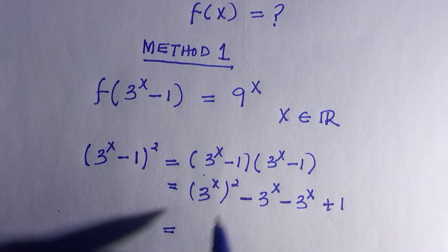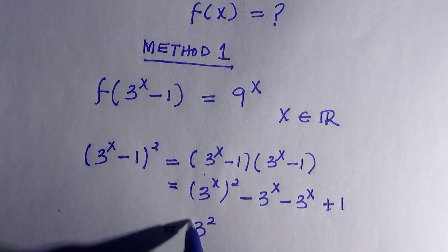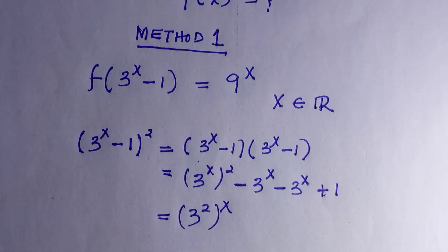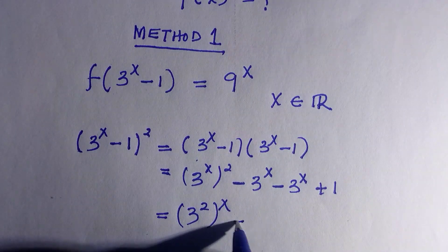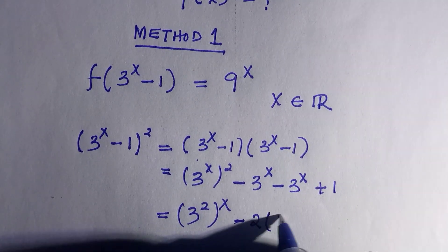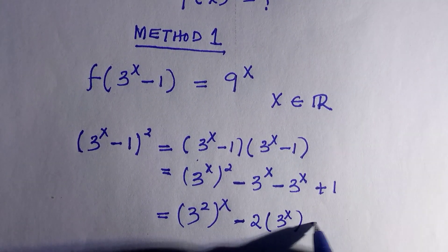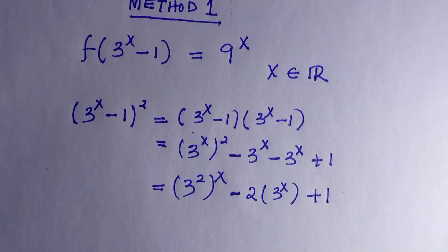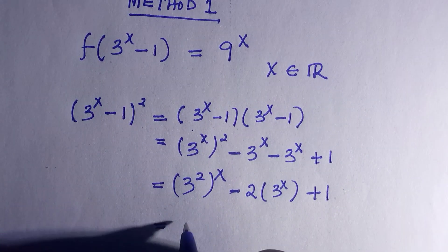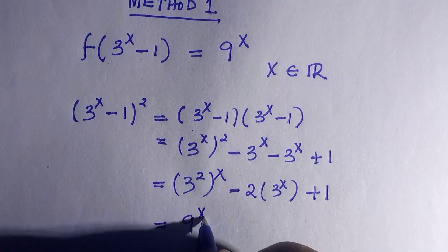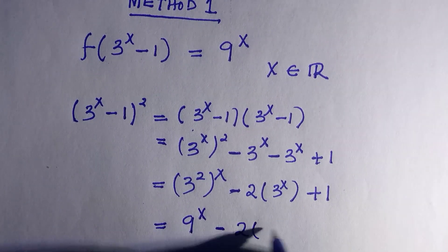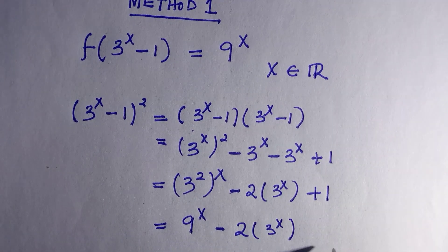From the law of indices, 3 squared to the power of x gives us 3^(2x), which equals 9^x. So we get 9 to the power of x, minus 2 times 3 to the power of x, plus 1.